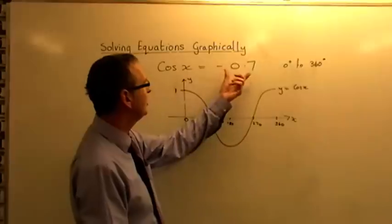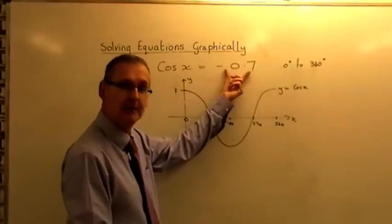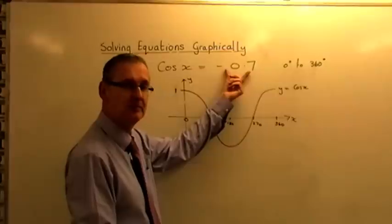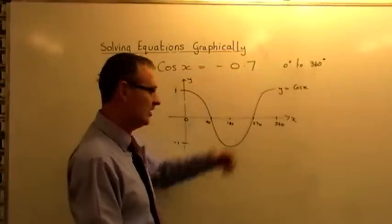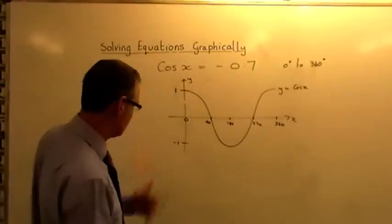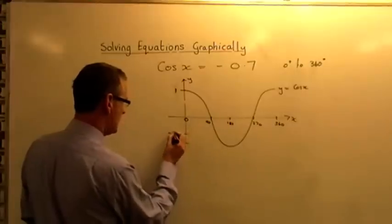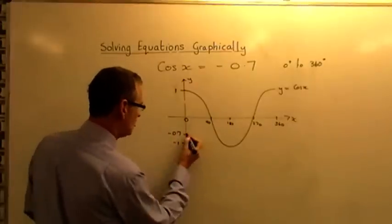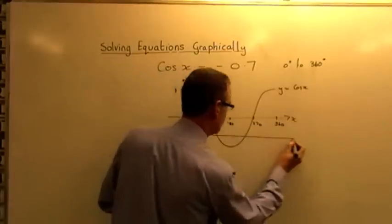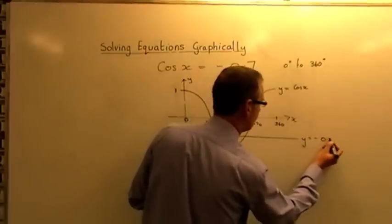So next what would you do? Well, you'd take the right-hand side, and you'd plot the line y equals minus 0.7. So, on this particular sketch, minus 0.7 would be a bit about there, minus 0.7, and you just draw a horizontal line, like so. That's y equals minus 0.7.